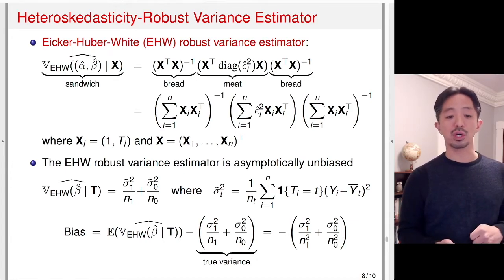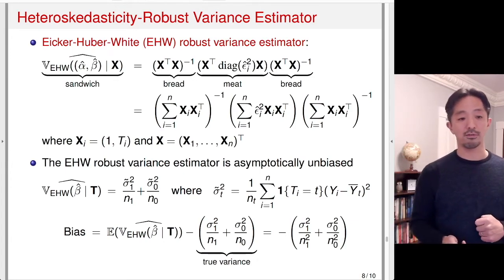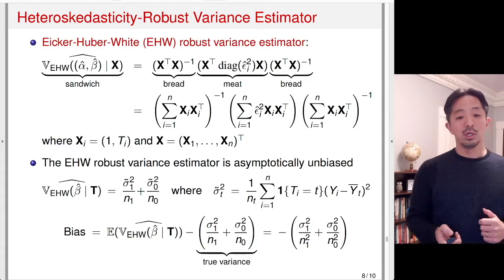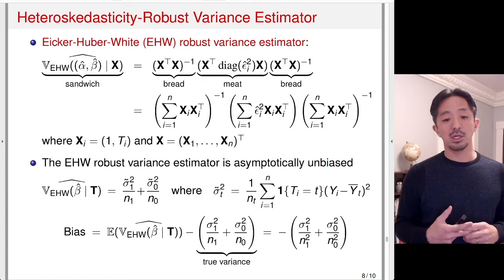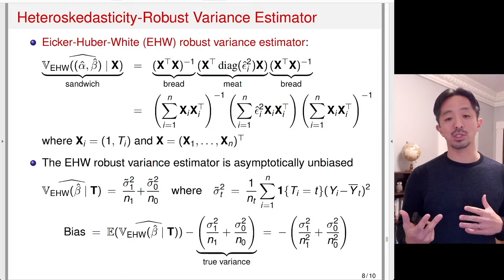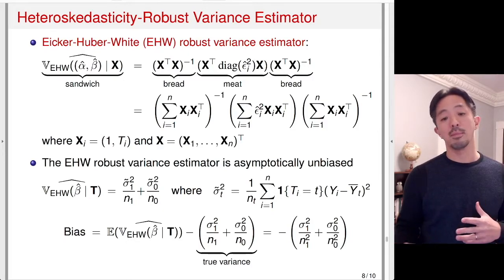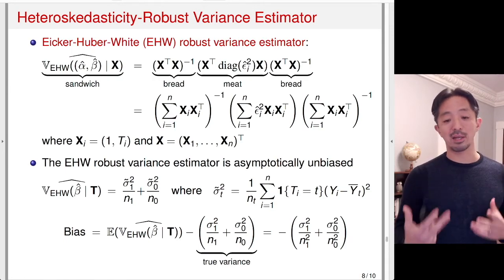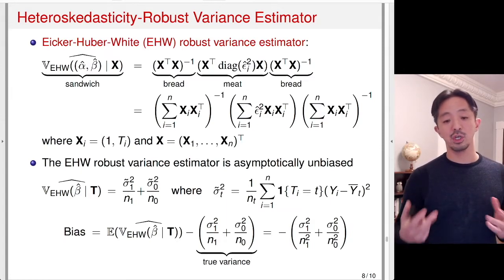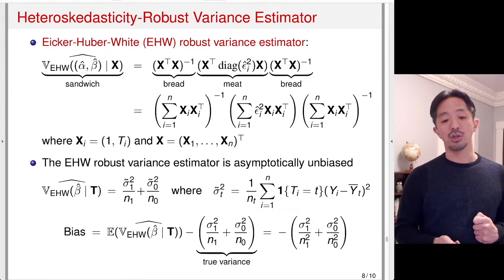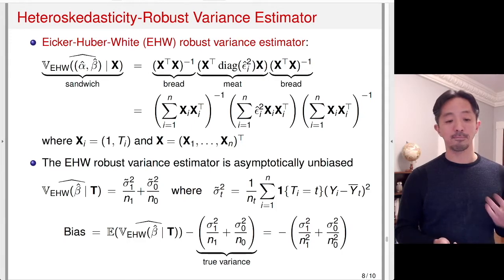To summarize: the heteroskedasticity-robust variance estimator, familiar from linear regression, still works in the randomized experiment framework. It is asymptotically equivalent to the true variance derived under Neyman's formulation.